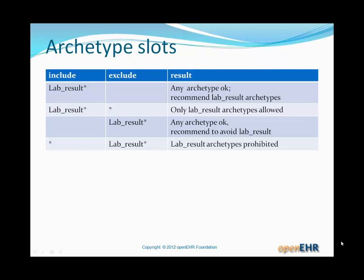Similarly, if there's an exclude constraint on its own, then it actually means that any archetype is acceptable, but we recommend avoiding any archetype that was particularly stated — in this case lab result. And lastly, if there's an exclude constraint with an include-star constraint, it means that lab result archetypes are in fact prohibited.